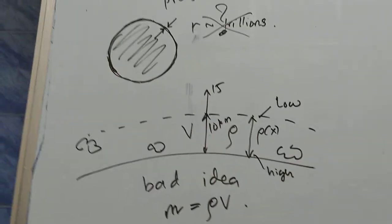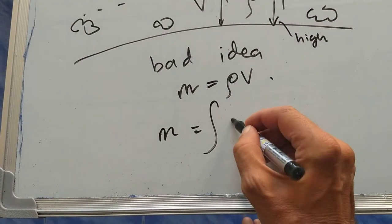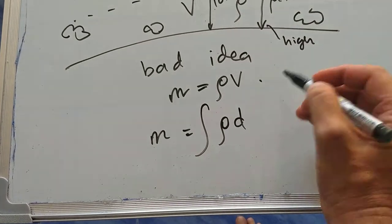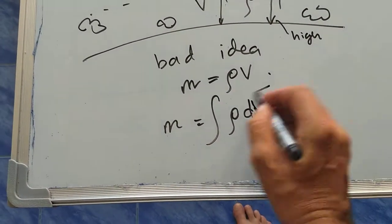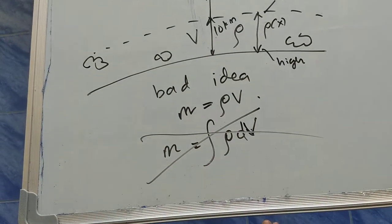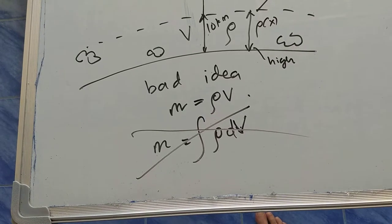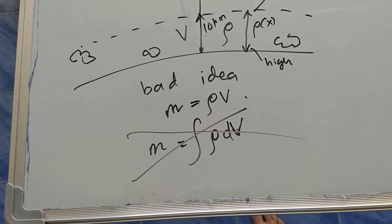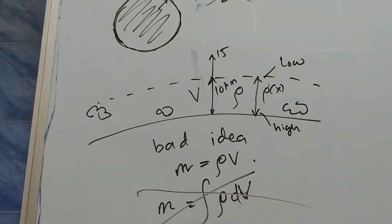So what are you going to do? You're thinking, okay, I'm going to use calculus. So M is integrate ρ dV, like this. This is a bad idea. You definitely don't want to do that, because you don't even know how this function varies.